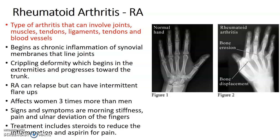In this knee image you can see a total loss of joint space. We often do standing knees for this reason, looking for compression of the joint space. Rheumatoid arthritis, or RA, is a type of arthritis that can involve joints, muscles, tendons, ligaments, and blood vessels. It usually begins as chronic inflammation of the synovial membranes. RA can relapse and have intermittent flare-ups. It affects women three times more than men, and common signs and symptoms include morning stiffness or pain and ulnar deviation of the fingers.